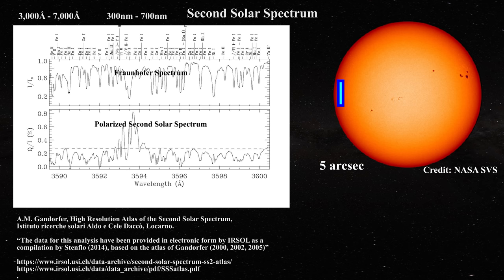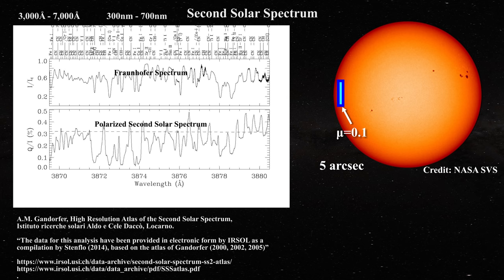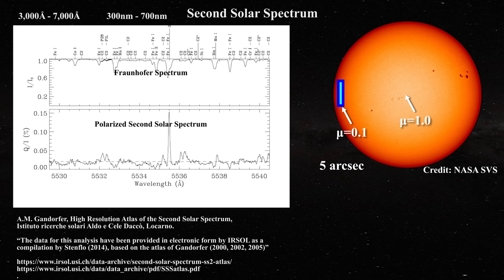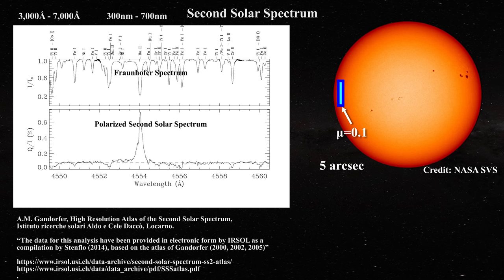Both spectra are taken near the limb of the sun at a position of 5 arcseconds inside the limb. In this case, the cosine of the heliocentric angle corresponds to mu equals 0.1. Conversely, when the solar spectrum is obtained from the center of the solar disk, one would have a mu value of 1. So the data was obtained close to the solar limb, not at the center of the disk.